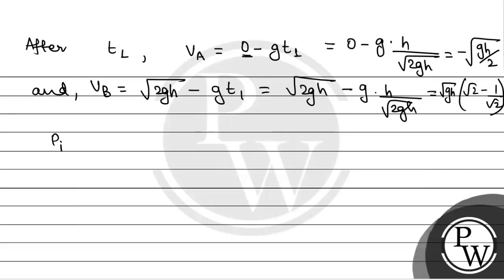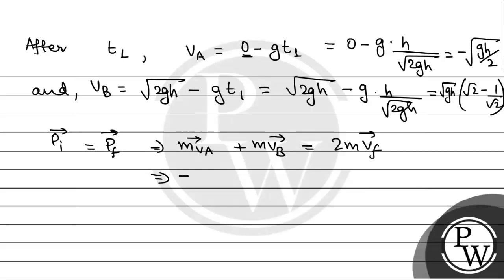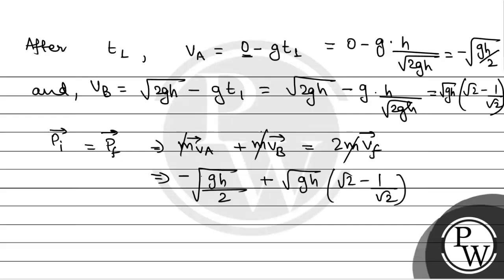At the time of collision, initial momentum equals final momentum: m·va + m·vb = 2m·vf, where vf is the final velocity of the combined mass 2m after the completely inelastic collision. Mass m cancels, giving vf in terms of va and vb.